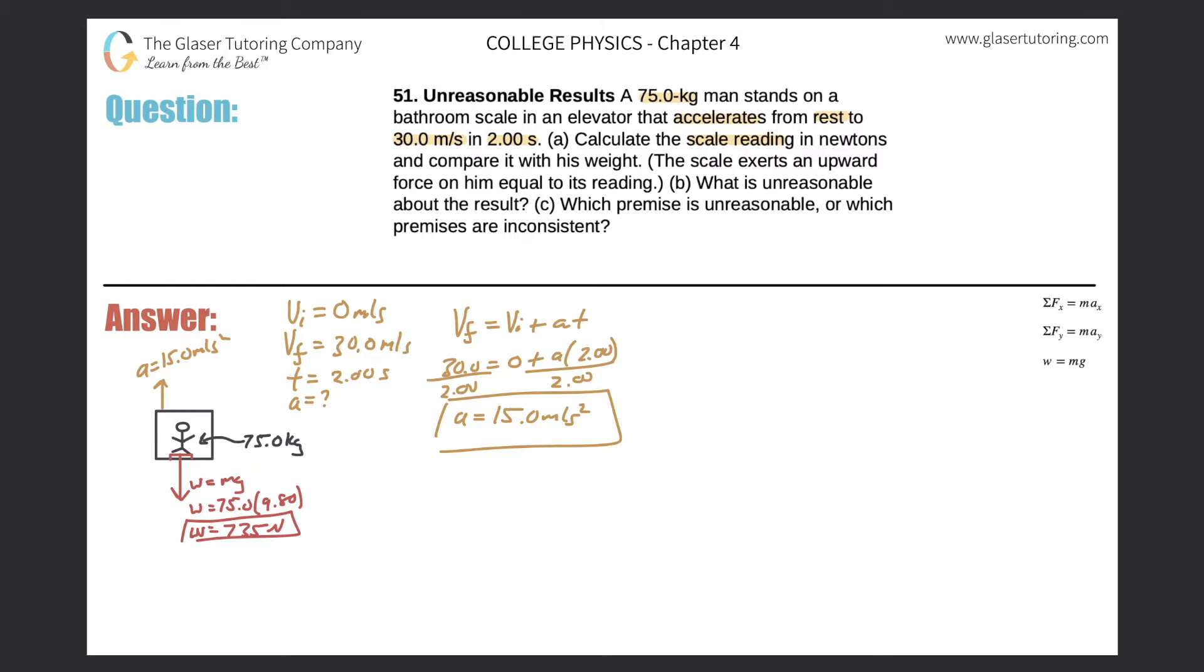Since there is a net acceleration in the positive y direction, I know there has to be some force pulling up on this elevator. I'm going to call it something like F_applied, or you could call it tension, whatever you want. But I think force applied might make the most sense. What I'm going to do here is calculate that force applied, and then we'll see how we can relate that to what the scale may read.